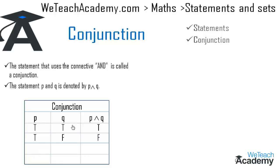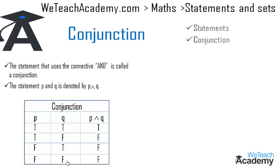If p is true and q is false, then the truth value for p ∧ q is false. If p is false and q is true, then the truth value for p ∧ q is also false. And if both statements p and q are false, then the truth value for p ∧ q would also be false.